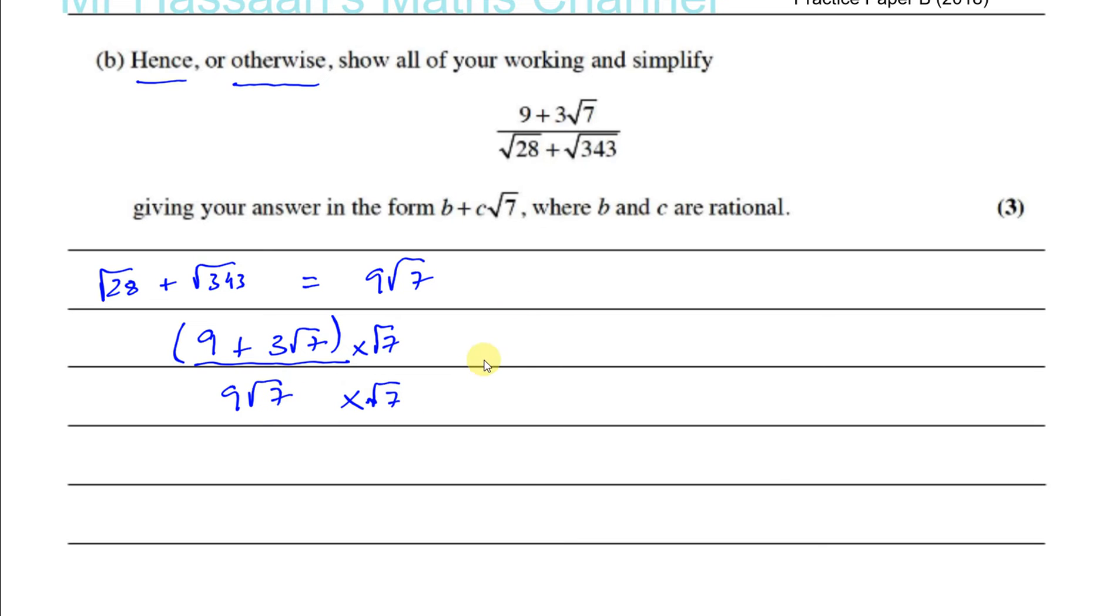That way you'll end up with 9 times 7 and the denominator will be rational. But what I do to the denominator, I must also do to the numerator and multiply the whole of the numerator by root 7. Some people multiplied it by 9 root 7 which is perfectly fine, it's just you're making the numbers bigger for yourself when you're simplifying. There's no need to multiply it by 9 root 7 because if you multiply it by root 7, the denominator will become rational anyway. So 9 times root 7 plus 3 times, now root 7 times root 7 gives you just 7, so that'll be 3 times 7 over 9 times 7.